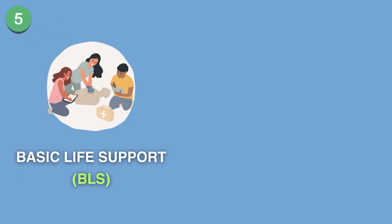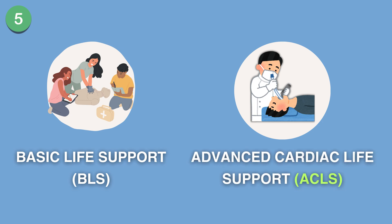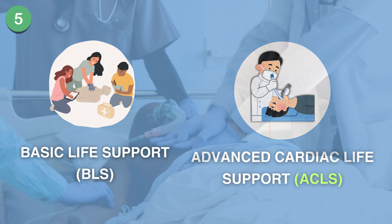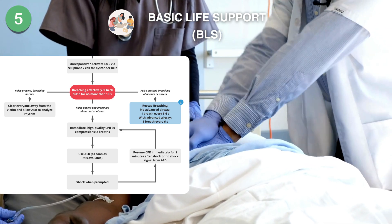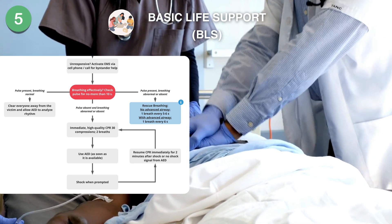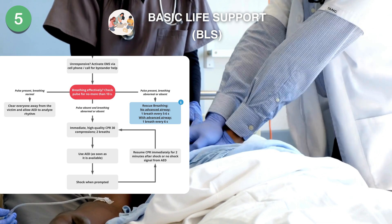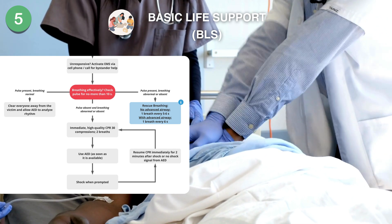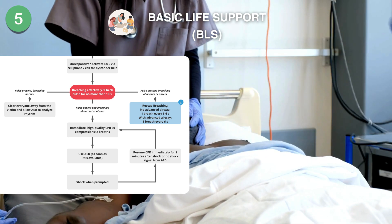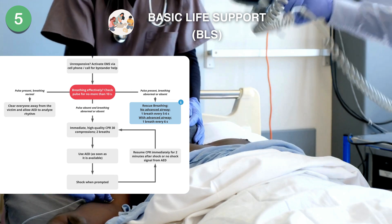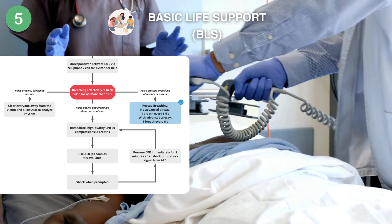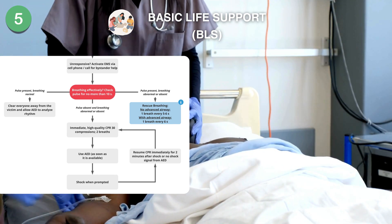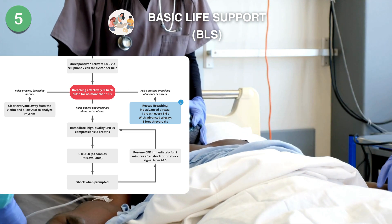First up, we have Basic Life Support, or BLS. When a patient is unresponsive and not breathing normally, you start with chest compressions right away. You do 30 compressions followed by two rescue breaths. Keep going until help arrives or the patient starts showing signs of life. Also, use an automated external defibrillator, or AED — it analyzes the heart rhythm and can deliver a shock if necessary.